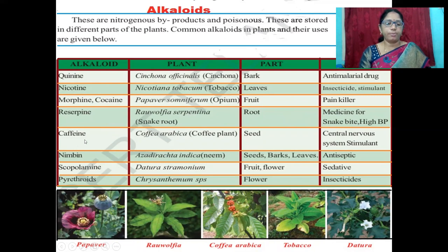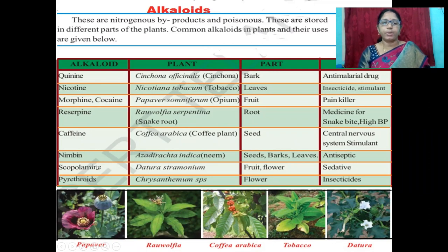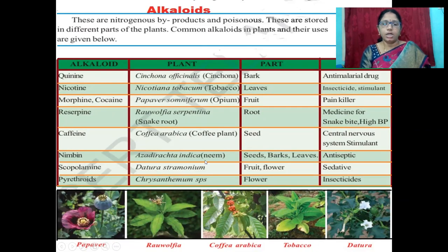Caffeine — obtained from seeds of Coffea arabica (coffee plant), used as a central nervous system stimulant. Nimbin — obtained from seeds, bark and leaves of Azadirachta indica (neem plant), used as an antiseptic. Scopolamine — obtained from fruits and flowers of Datura stramonium (datura plant), used as a sedative. Pyrethroids — obtained from flowers of Chrysanthemum plant, used as insecticides.